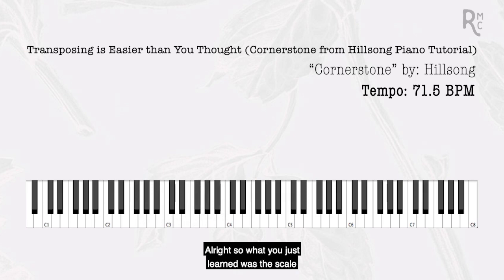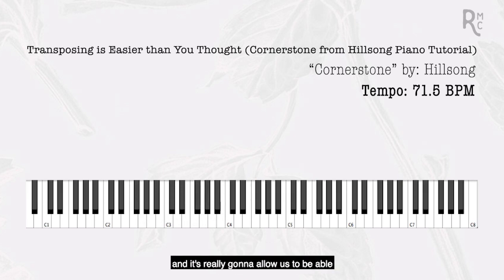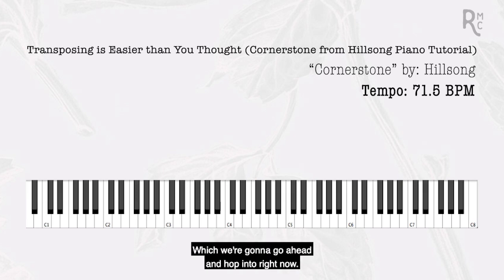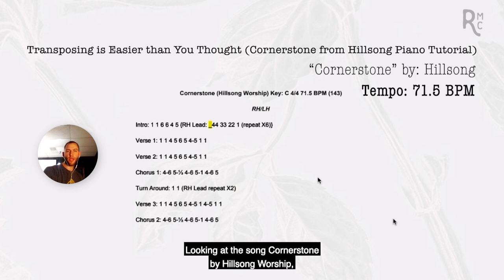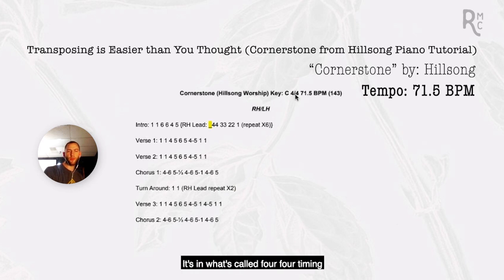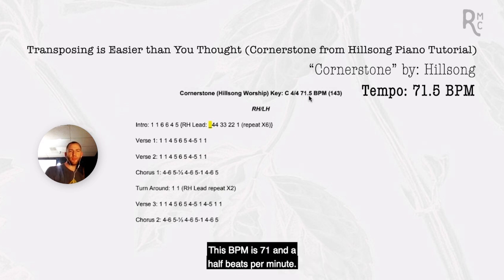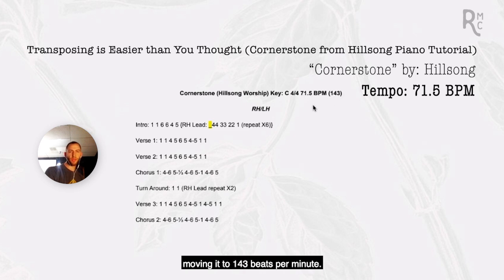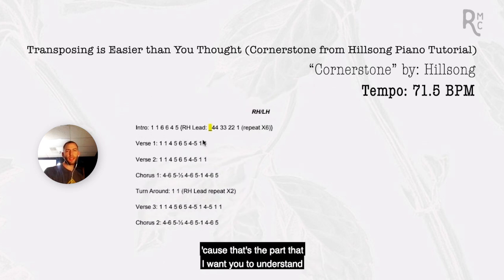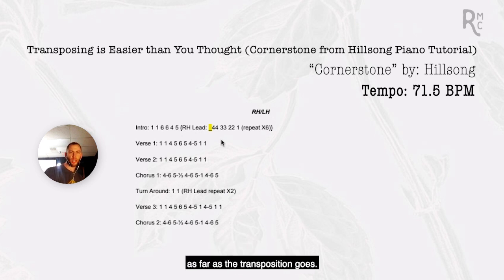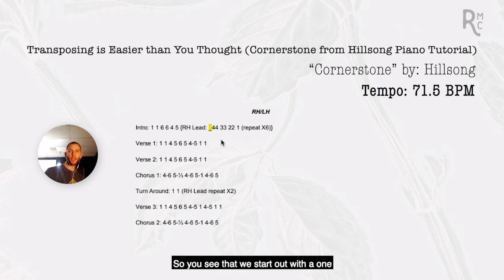What you just learned was the scale and chords in the key of C, which will allow us to play Cornerstone. Looking at the song Cornerstone by Hillsong Worship, it's in the key of C, in four-four time with four beats per measure. The BPM is 71.5 beats per minute — I like to double that tempo to 143 BPM. We're going to mainly focus on the intro for the transposition, which we'll play in both the key of C and the key of G.